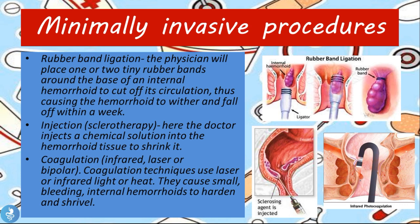Minimally invasive procedures include rubber band ligation, where the physician places one to two tiny rubber bands around the base of the internal hemorrhoid to cut off its circulation, causing the hemorrhoid to wither and fall off within a week. Another option is injection or sclerotherapy, where the doctor injects a chemical solution into the hemorrhoid tissue to shrink it. A sclerosing agent is injected directly into the internal hemorrhoid, causing it to shrink and wither away.